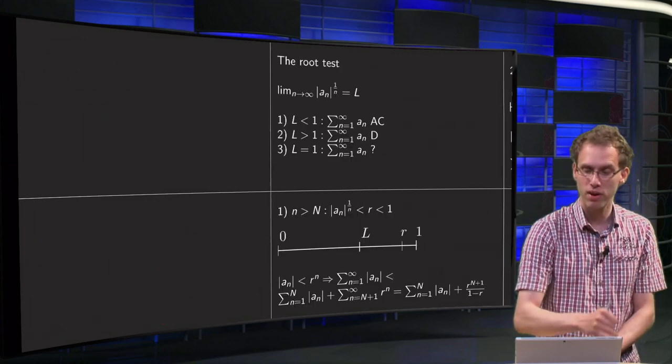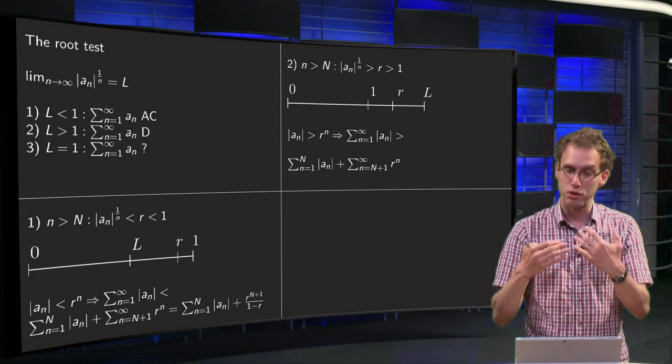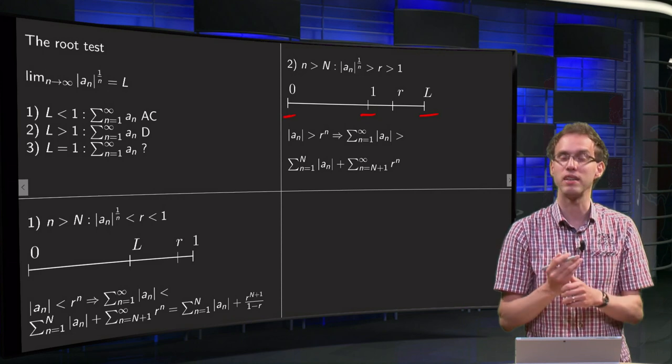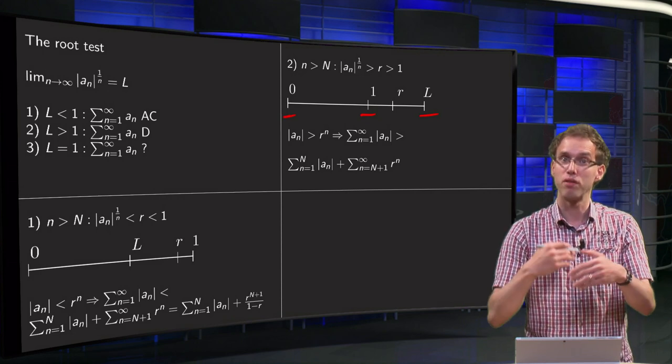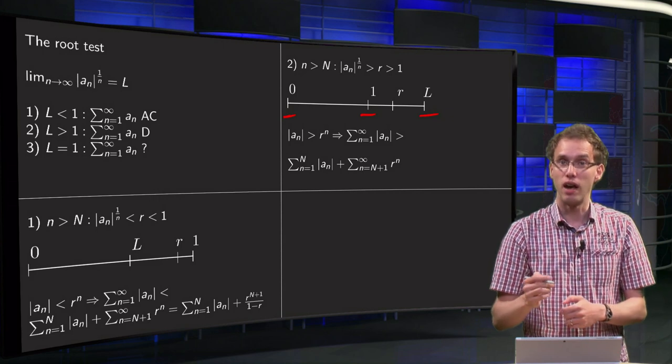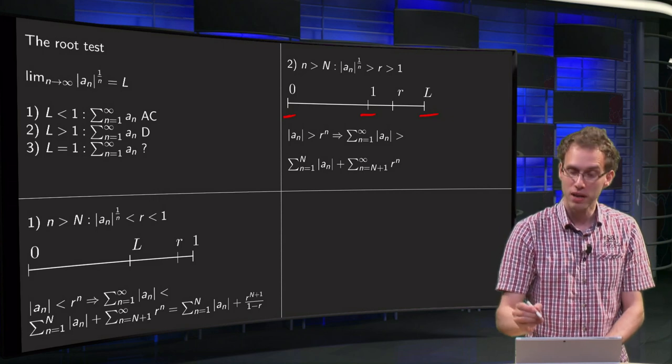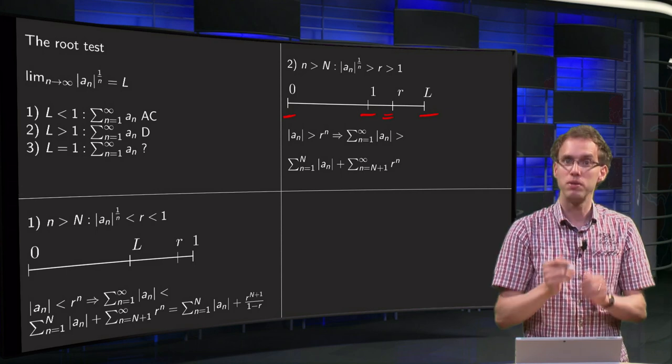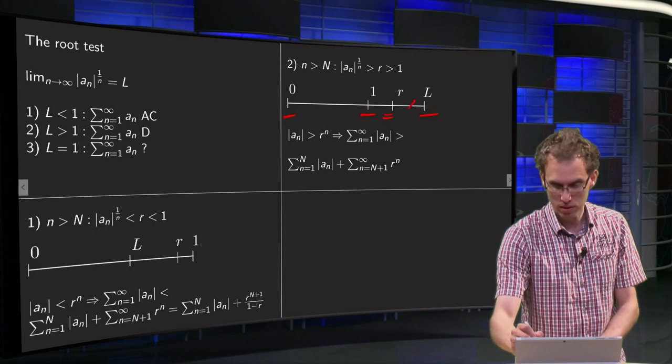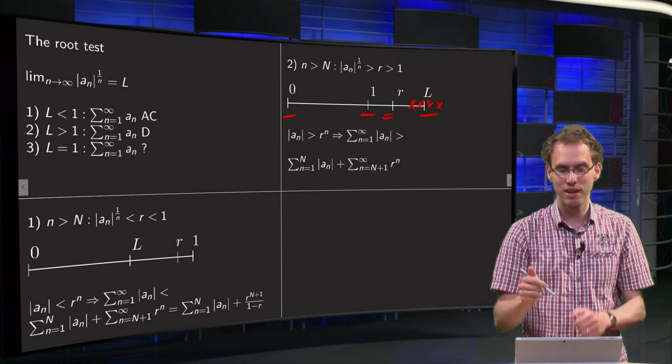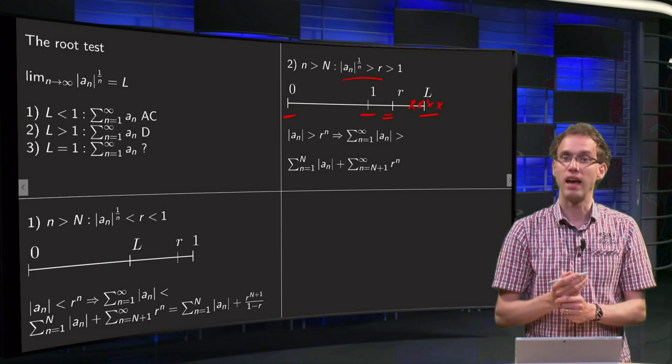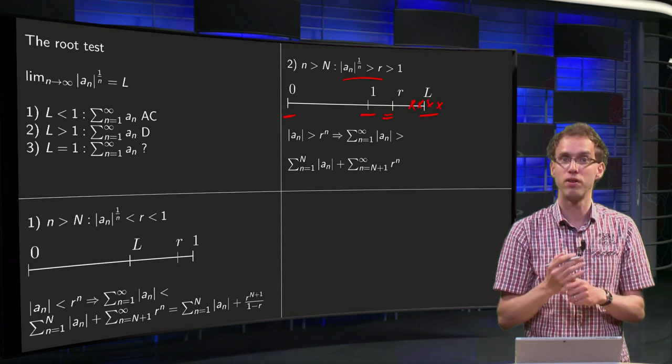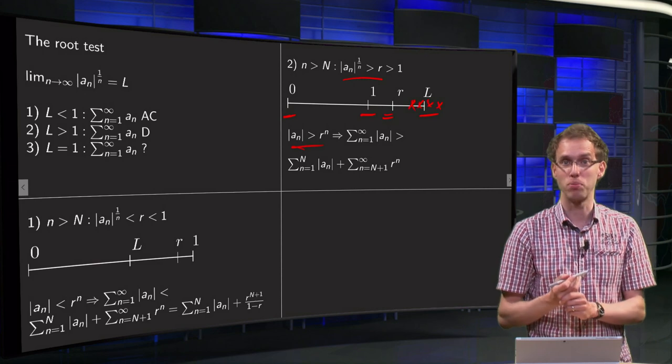We can do of course a similar argument for L bigger than 1. Because if L is bigger than 1, so we place L here, bigger than 1, 0 is still here of course, but doesn't matter now. Then you know that if you are far enough in your series, you get very close to your L, but in particular your terms a to the power 1 over n will be bigger than this r, if you are far enough. Or your aₙ will be bigger than r to the power n.